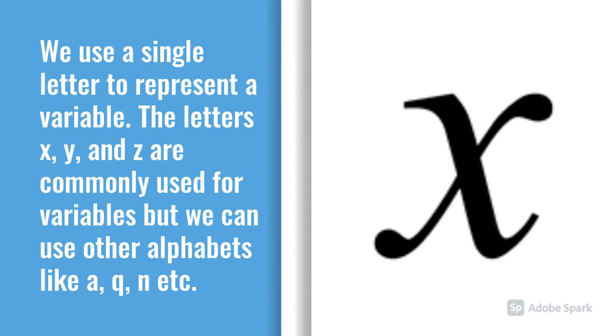We use a single letter to represent a variable. The letters x, y, and z are commonly used for variables, but we can use other alphabets like a, q, and etc.